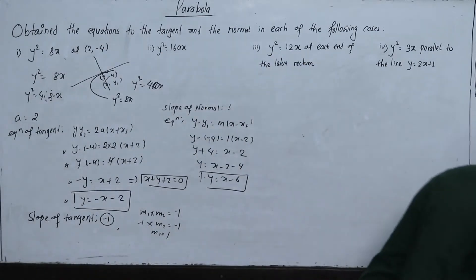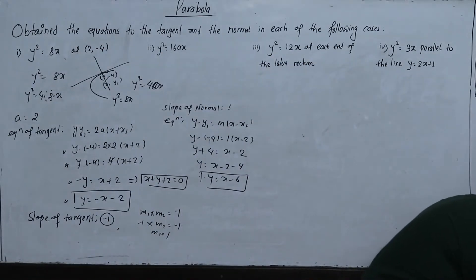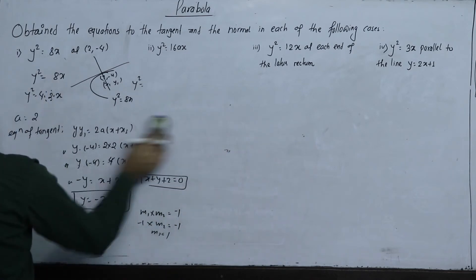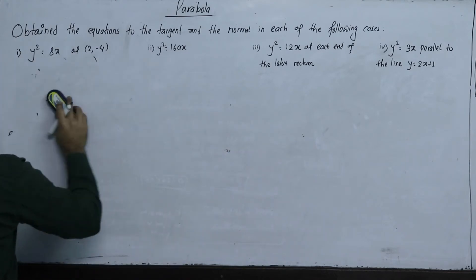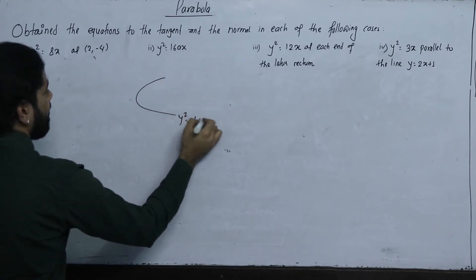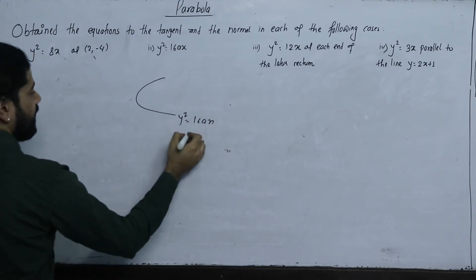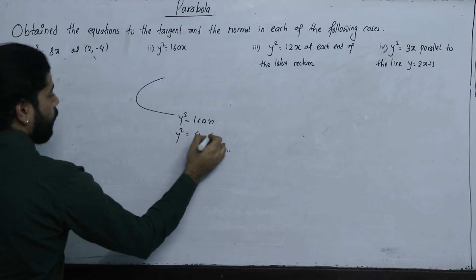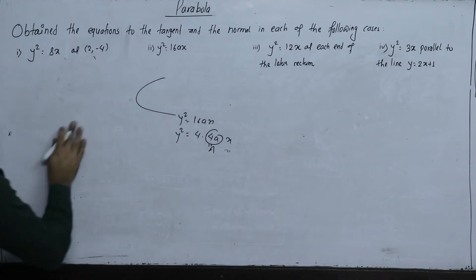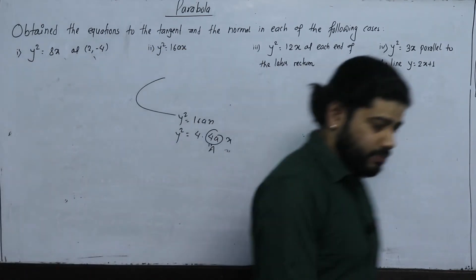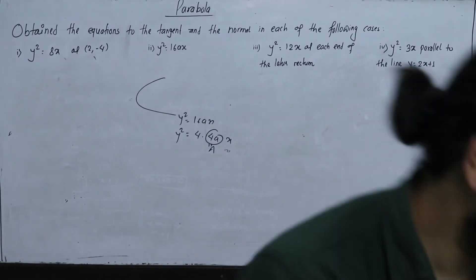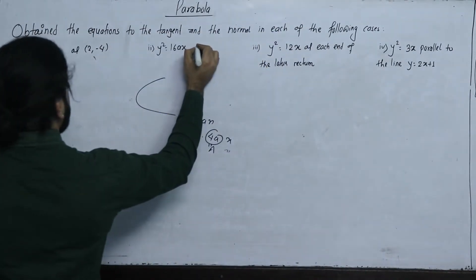The first part is solved. Now go to the second part. Y equals 16x. So y squared equals 16x. Now for the normal, y squared equals 4 into 4a times x.